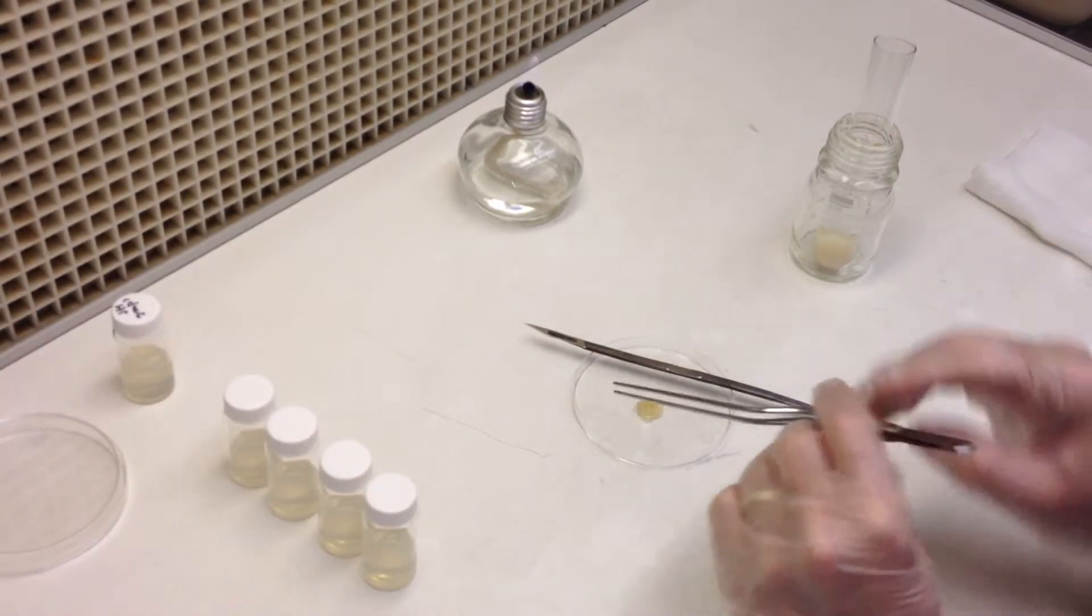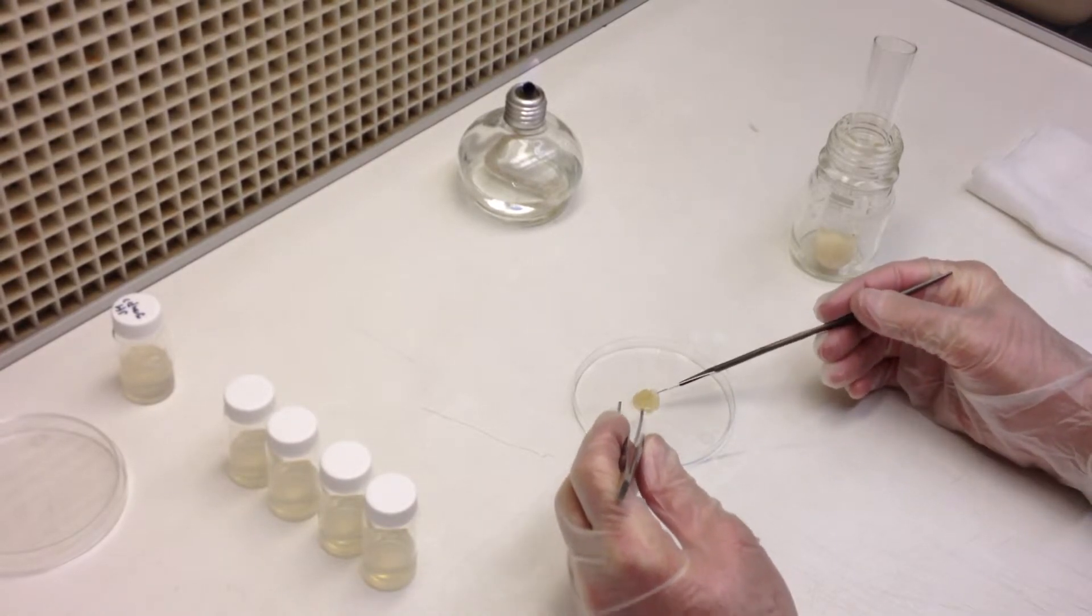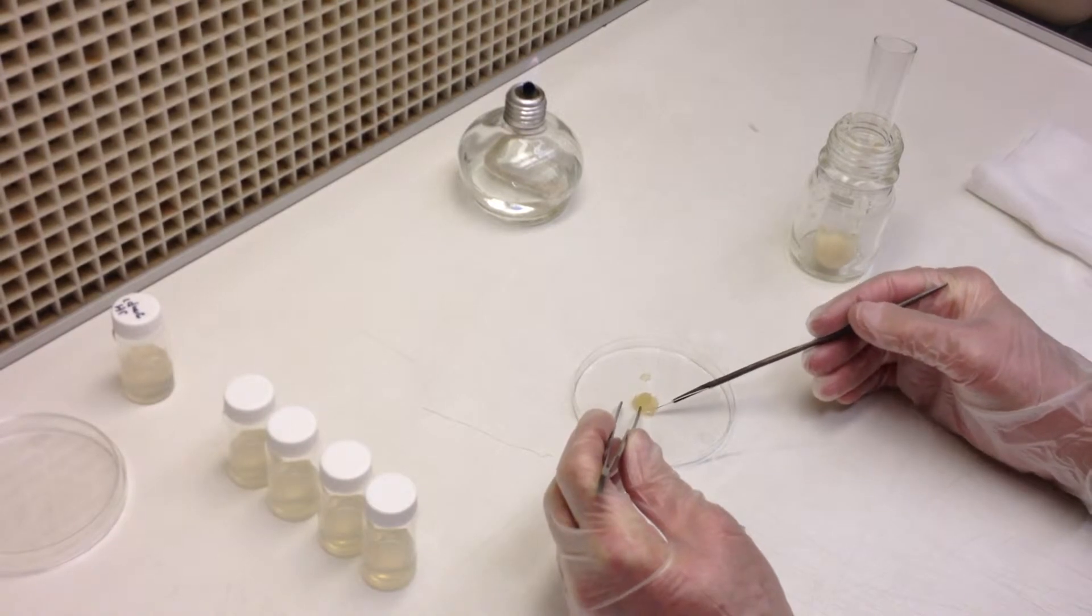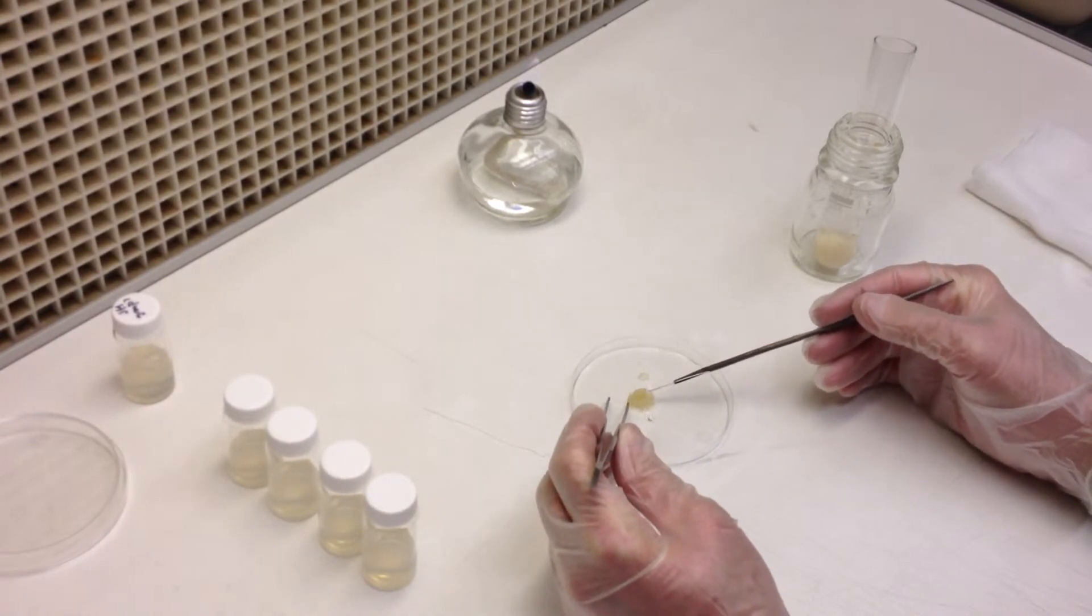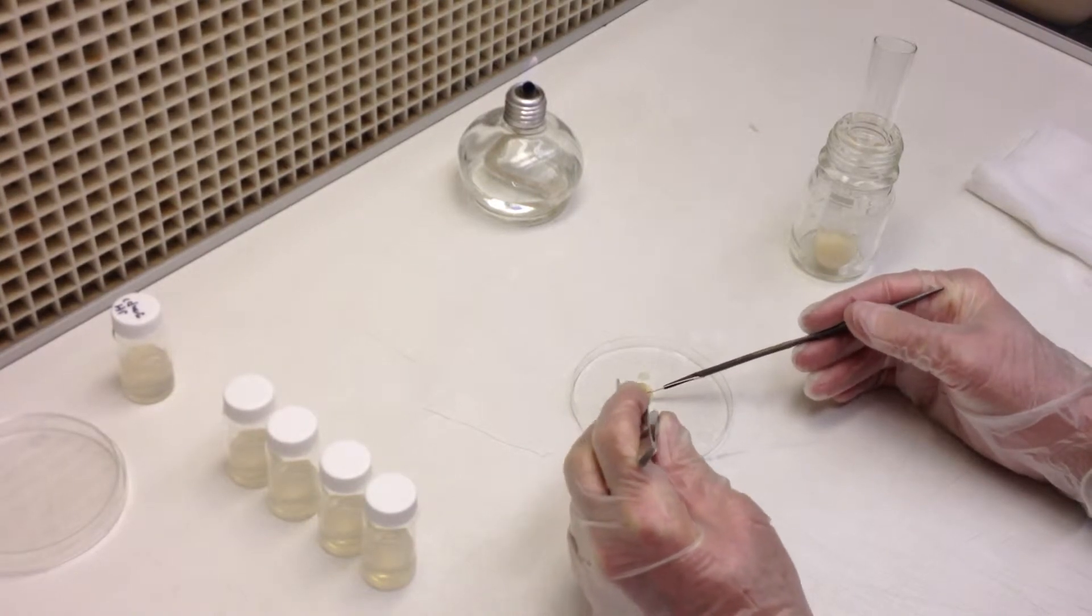Put them in the sterile Petri plate and either using the forceps or the scalpel, be sure to remove any agar that comes with it. You don't want to pass on the agar that came from the old medium onto the new medium.